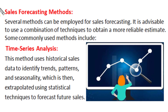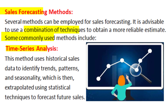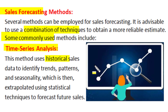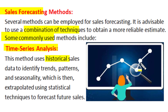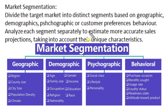Several methods can be employed for sales forecasting. It is always advisable to use a combination of several techniques to obtain a more reliable estimate of probable sales. Some commonly used methods for sales forecasting are time series analysis, market segmentation, and expert opinion. Time series analysis uses historical sales data which are already documented and realistic. When analyzed, these data can identify the trends, patterns, and seasonality in sales information, and the same data can be extrapolated to get estimates of future sales using statistical techniques, which if used properly will give the most reliable and accurate sales forecast.